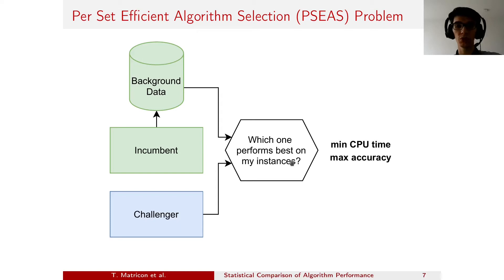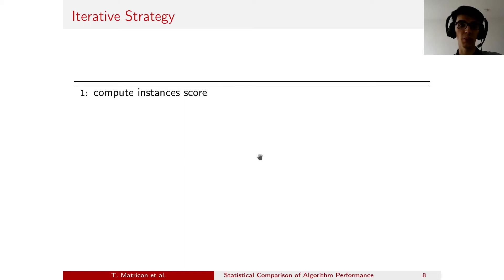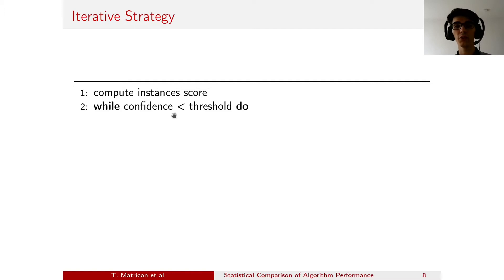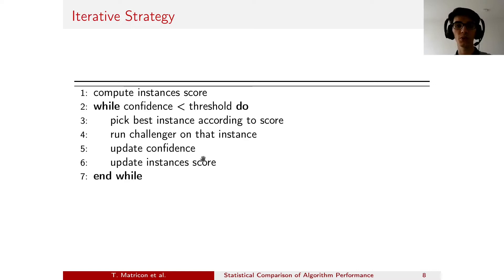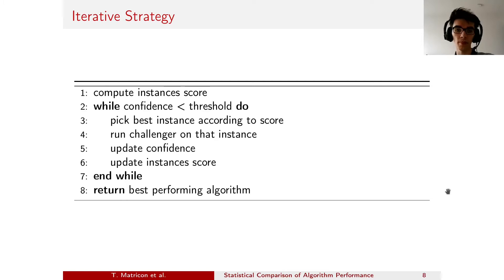To solve this problem, we have a high-level strategy which is an iterative process. First we have some initialization where we compute for each instance their score. Then, while the confidence is less than our desired threshold, we pick one instance — the best-scoring instance — run the challenger on that instance, update our confidence, and recompute the score for each of the remaining instances. We repeat this process and return the best performing algorithm.